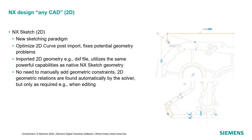Now you've seen how NX works effectively with imported 3D data, let's take a look at how it works with imported 2D data. 2D data can come in a number of neutral file formats such as DXF and DWG. The tool we use inside of NX to manage working with this data is the NX sketch tool, which uses a very different sketching paradigm compared to other sketching tools in the market.